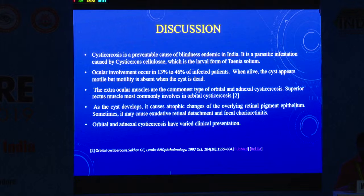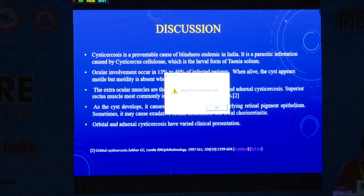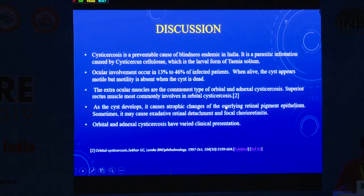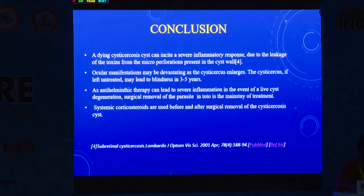In discussion, cysticercosis is a preventable cause of blindness, endemic in India. It is a parasitic infection caused by Cysticercus cellulosae, the larval form of Taenia solium. The extraocular muscles are the commonest site of orbital and adnexal cysticercosis, with the superior rectus muscle most commonly involved. Diagnosis of orbital and adnexal cysticercosis is based on clinical, serological, and radiological findings. Systemic corticosteroids are used before and after surgical removal of the cyst.